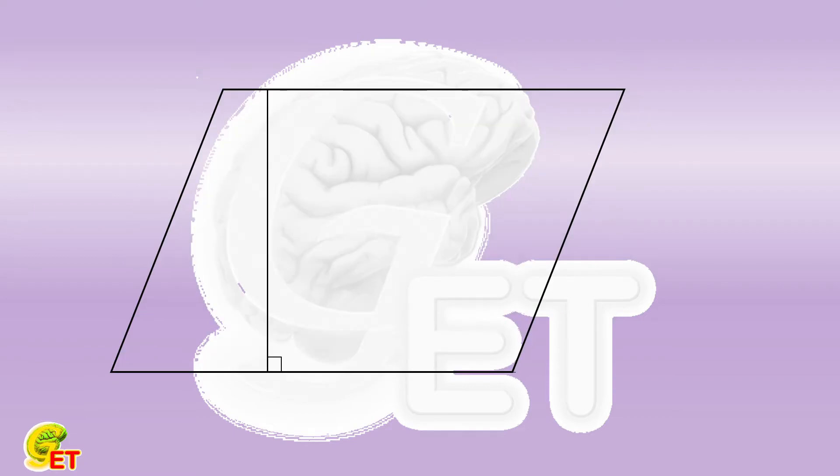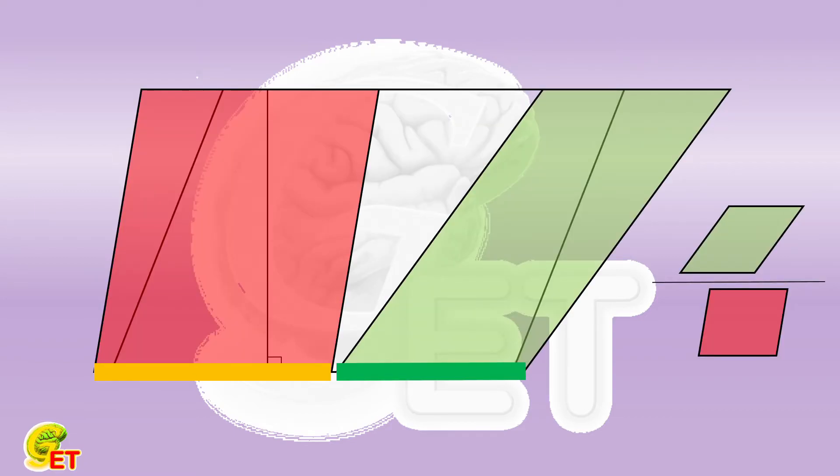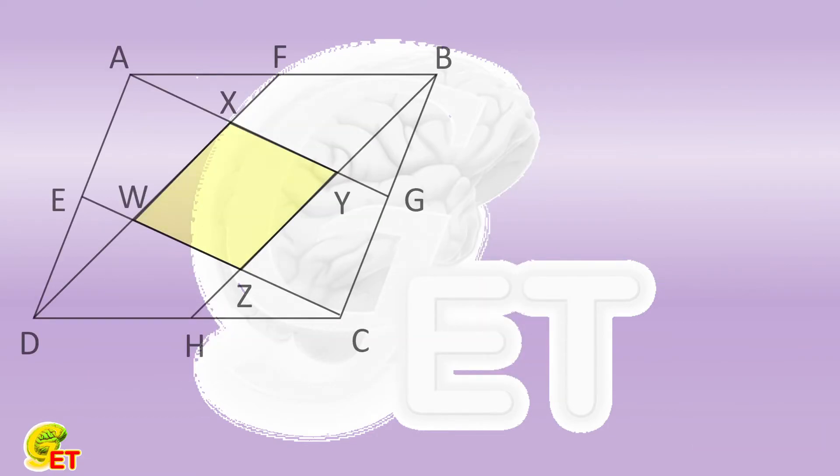Furthermore, if two parallelograms share the common height, the ratio between their areas is equal to the ratio between their bases. Now, let's get back to our second task. We know the ratio of CG to CB is 1 to 2. So the ratio of the areas of parallelogram AGCE to ABCD is 1 to 2.